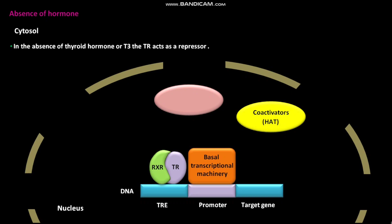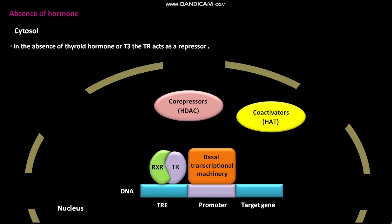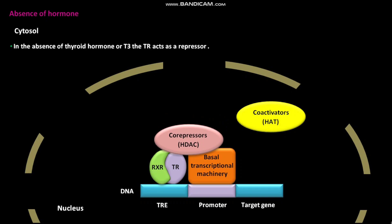In the nucleus of the cell, co-repressors are present with HDAC activity, or histone deacetylase activity. In the absence of thyroid hormone, the TR associates with these co-repressors with HDAC activity. Due to the HDAC activity of co-repressors, the transcription of the target gene is inhibited.